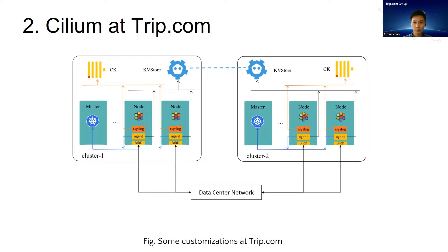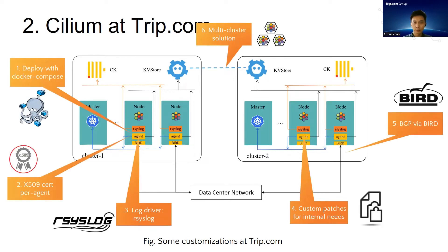Now let's look at some customizations. Two Kubernetes clusters are shown here. First, we use Docker Compose to deploy Cilium. Second, we assign each agent a dedicated certificate for Kubernetes authentication instead of the shared service account used by all agents. Third, we helped to mature Cilium's RSS log driver and have sent all agent logs to a log house for analyzing and troubleshooting. Fourth, we use a few patches to facilitate business migration, but these are not general so we didn't upstream them. Fifth, we use BIRD as the BGP agent. And last, we developed a new multi-cluster solution called QE Store Mesh — more on this later.